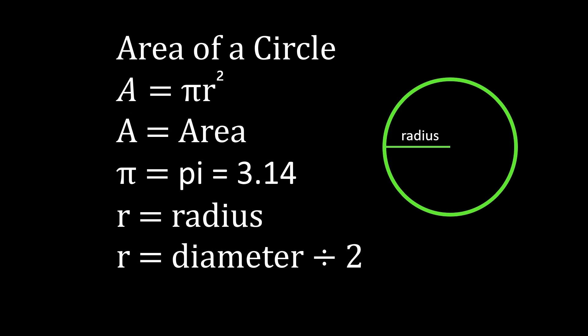We'll use the formula area equals pi r squared to calculate the area, where A is our area. For pi we'll use 3.14, or if you're able to use a calculator you'll just use the pi button on your calculator. R is the radius, and if you're given a diameter and need to calculate the radius, diameter divided by 2 equals your radius.